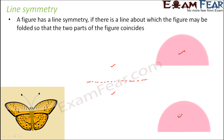Let us look at another example — the butterfly. The butterfly has a very beautiful symmetry. This half of the butterfly and this half are exactly similar. Now imagine this butterfly is drawn on a sheet of paper. If you draw a line here and fold the paper, this half and this half exactly cover each other completely — you do not see them separately. So the butterfly also has line symmetry.